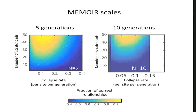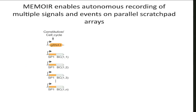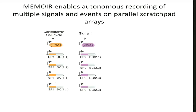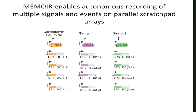The system scales surprisingly well. If we wanted to go to a much deeper tree like 10 generations, we can do that with only about 50 scratch pads, which we think is totally feasible. Now, so far that's just lineage. But we also want to read out other kinds of signals. The beautiful thing about the system is that you can have one guide RNA working with one set of scratch pads to record lineage, but in parallel in the same cells, have a second set of scratch pads scratched by a different gRNA using the same Cas9 that can be responsive to any signal, like Wnt or BMP or anything else.